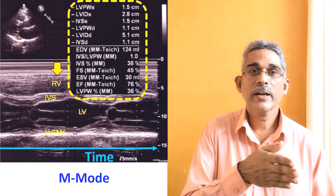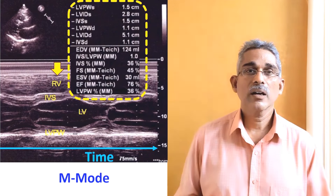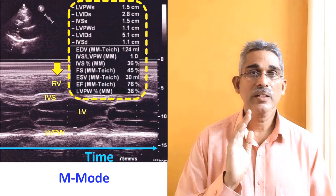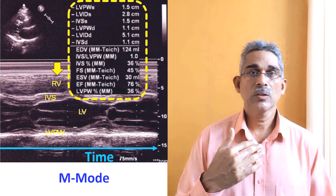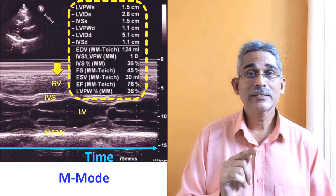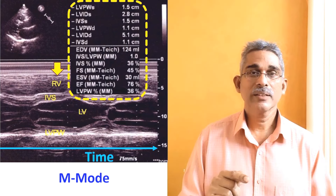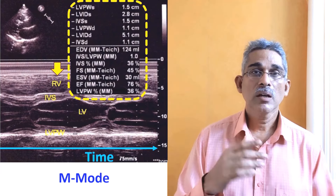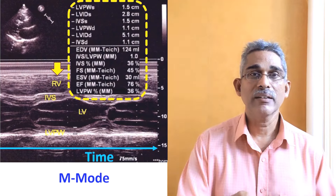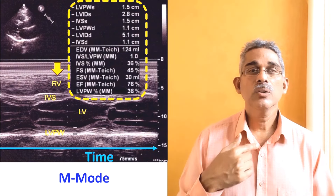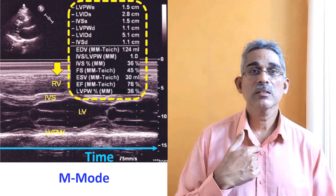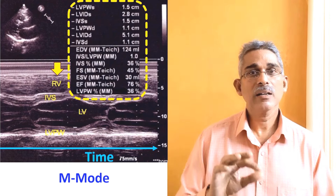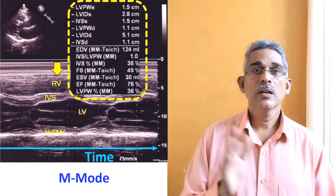The beam is electronically swung from one side to another to produce a two-dimensional image. In echocardiography, ultrasound signals are sent out and the echoes are received. Typically it might send for one microsecond and listen for 999 microseconds, then the next pulse is sent out. The time elapsed between the signal sent and the echo received allows you to find out the distance from the probe, and the image is computer-synthesized to produce a two-dimensional image.